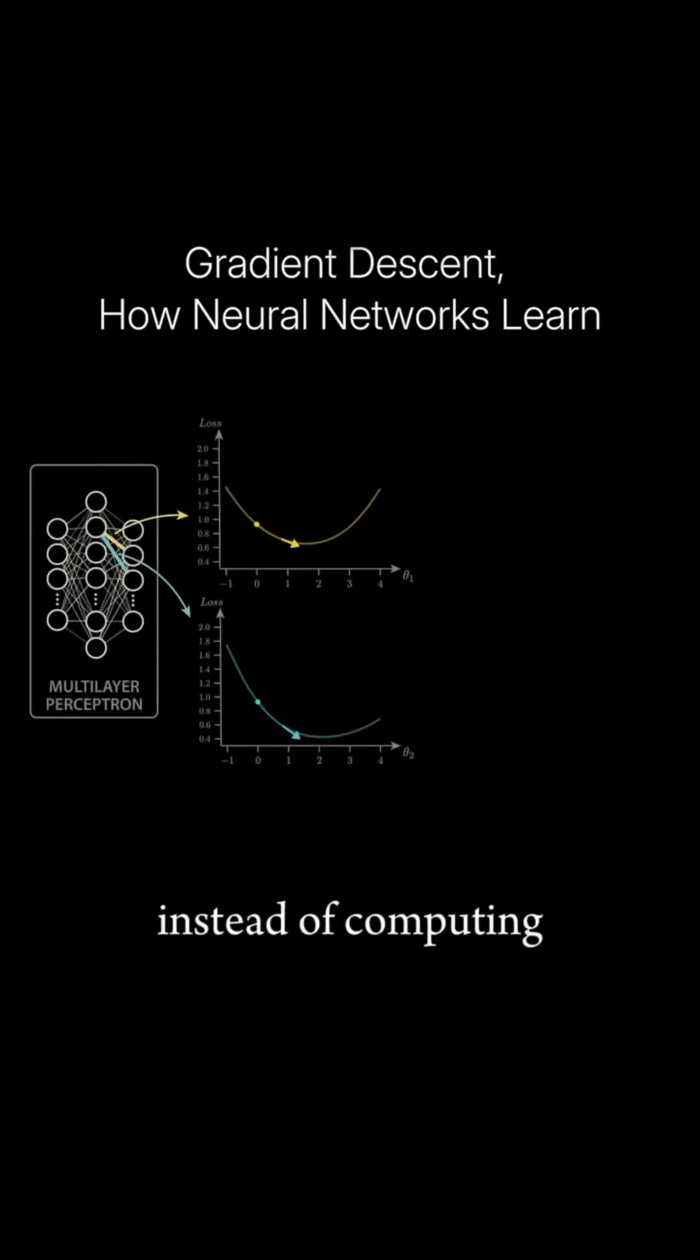For each parameter, instead of computing the loss across a range of values, we can compute the slope of the loss curve, telling us which way is downhill in each direction and how steep the descent is.